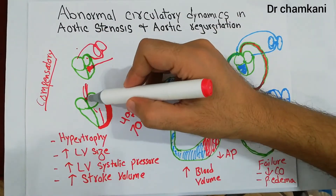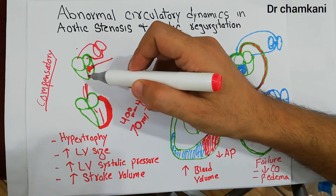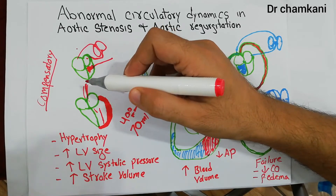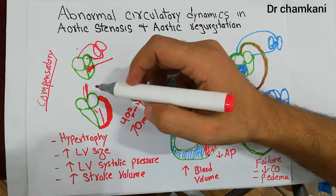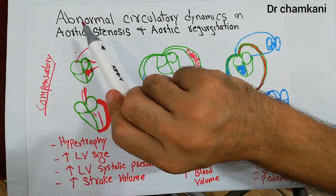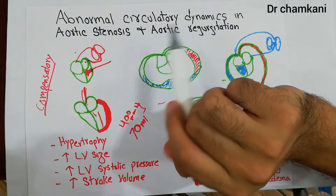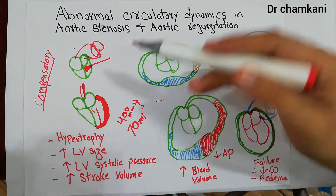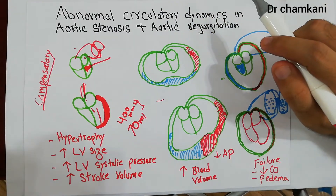These compensatory changes try to maintain circulation because the valve abnormality is either not allowing sufficient blood to move due to stenosis, or blood is returning back due to regurgitation. Either way, the amount of blood pumped has decreased and blood going to the body is decreasing. To overcome that, these compensatory changes occur — and in both conditions you will see hypertrophy, increased LV size, increased left ventricular pressure, and increased stroke volume.